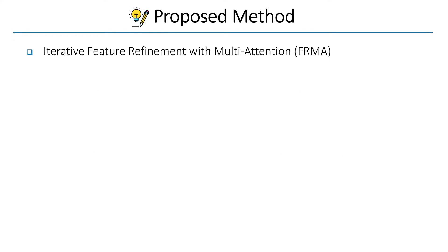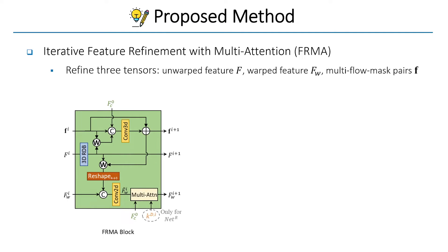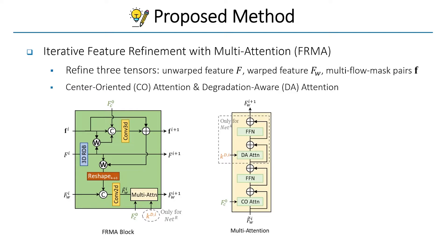The iterative feature refinement with multi-attention block refines three tensors: unwarped features, warped features, and multi-flow mask pairs. Additionally, the proposed multi-attention for refining warped features consists of center-oriented attention and degradation-aware attention. These two attentions are kind of cross-attention, updating features by computing queries from the center feature map of the initial unwarped features and predicted motion-aware degradation kernels. During this process, warped features globally adapt to degradation.